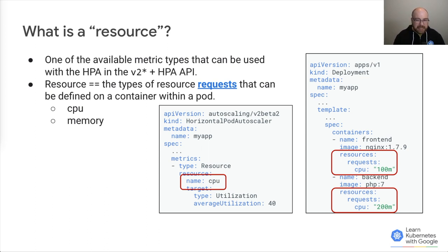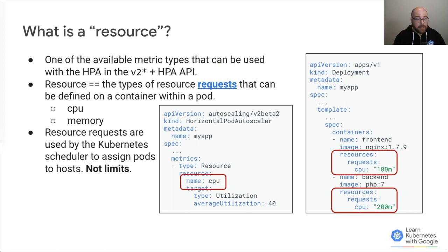This is a bit of a segue, but I want to point something out. When actually evaluating whether to scale up or down an application, the HPA uses requests, not limits. This is because the Kubernetes scheduler uses requests when assigning workloads to nodes. There are multiple reasons for that, but that could really be its own talk. So with that caveat out of the way, let's walk through a quick example.